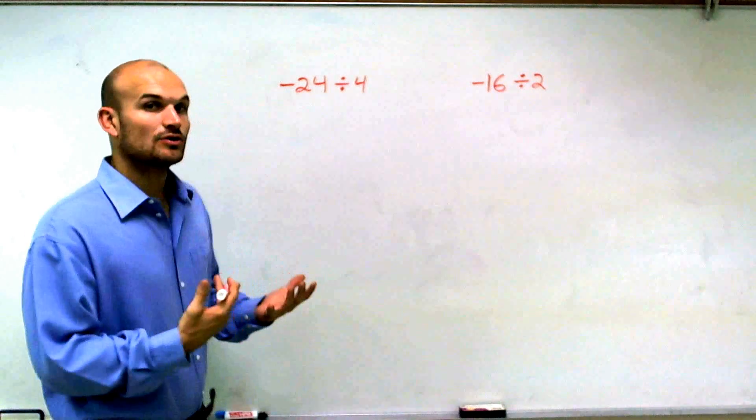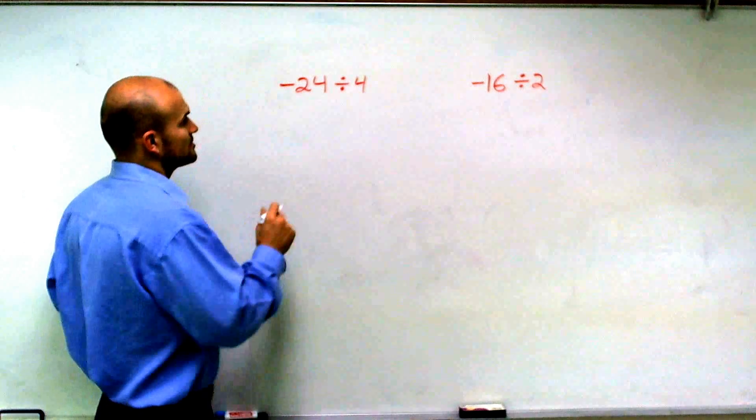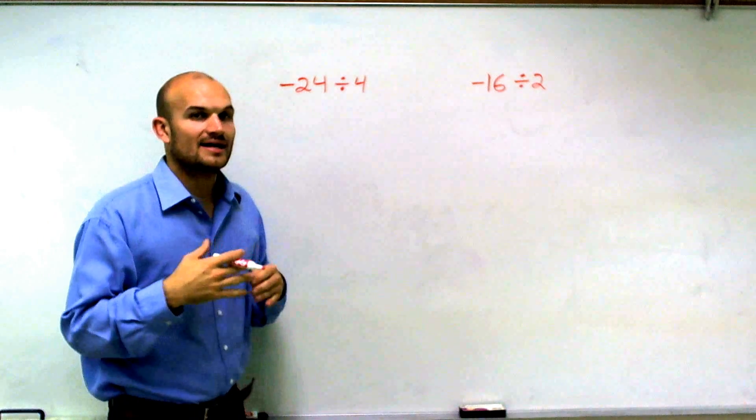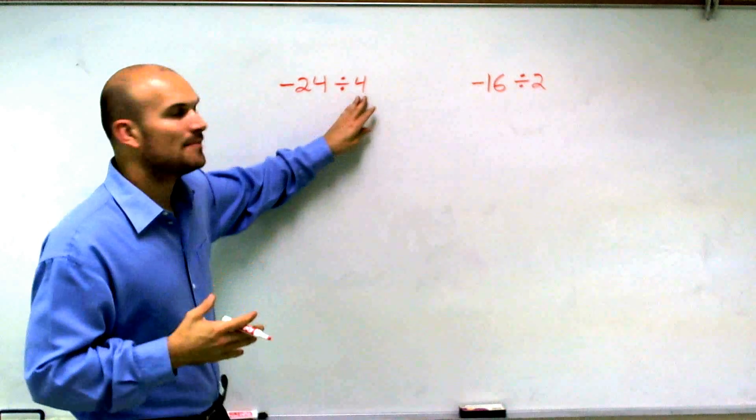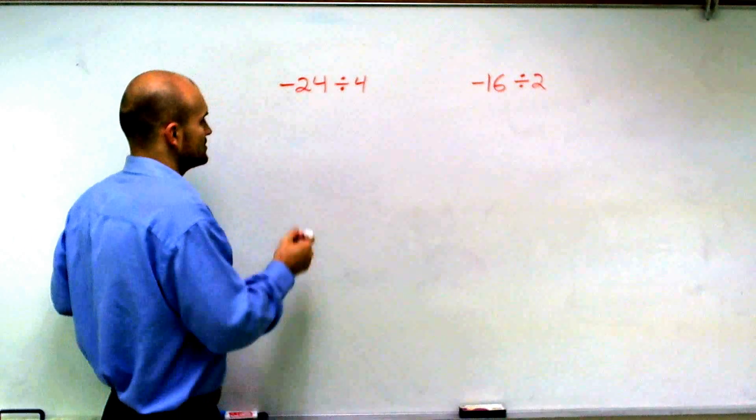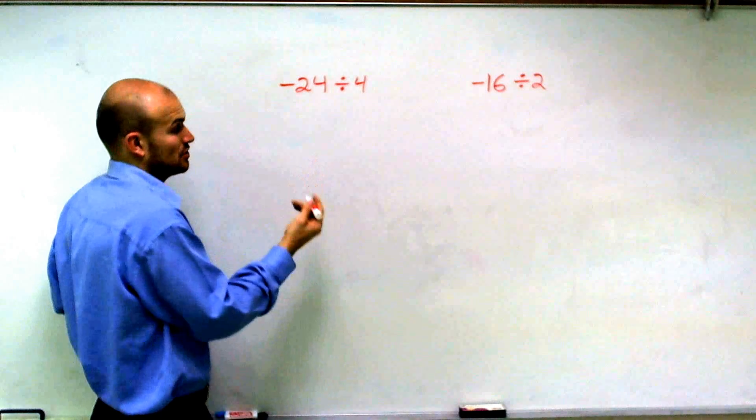It's very closely related to multiplication. So what I'm asking on this problem is negative 24 divided by 4. Another way to word that is, how many times does 4 evenly go into negative 24? Or not even evenly, just how many times does it go into it?